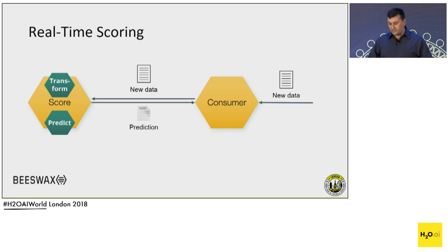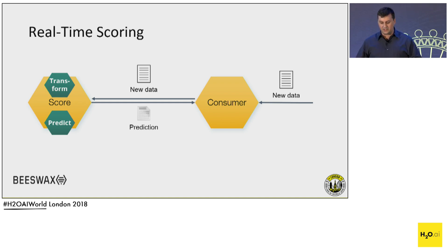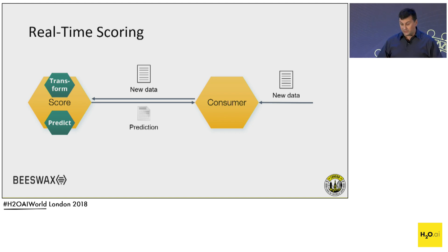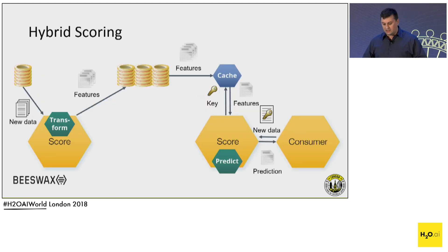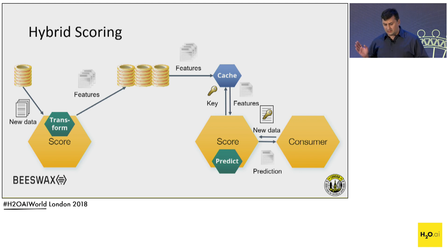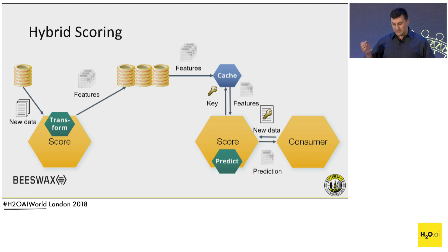Real-time scoring is simpler: the real-time consumer passes the request to the scoring engine, which transforms the data and produces the prediction and returns the answer. There is also a possibility for hybrid scoring, where features are computed offline and cached, but the prediction happens in real time using those precomputed features.